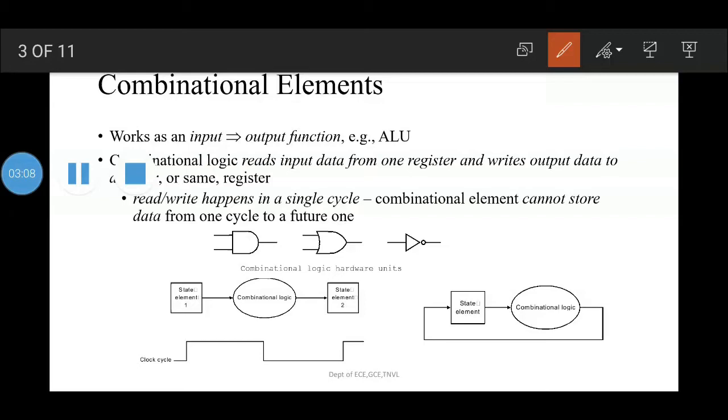Only an edge-triggered methodology allows us to read the contents of a register, send the value through some combinational logic, and write that register in the same clock cycle. It doesn't matter whether we assume that all writes take place on the rising clock edge or on the falling clock edge, because the inputs to the combinational logic block cannot change except on the chosen clock edge. Throughout this chapter we are using only the rising clock edge with an edge-triggered timing methodology. There is no feedback within a single clock cycle and this logic works correctly.